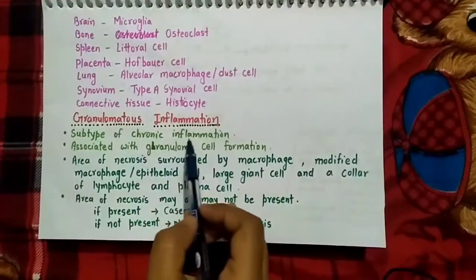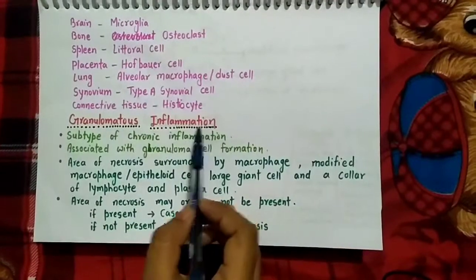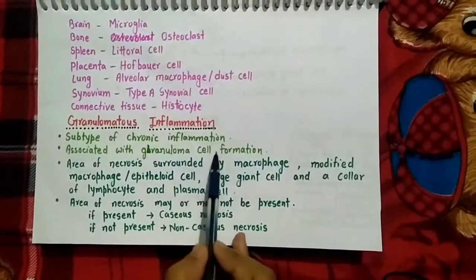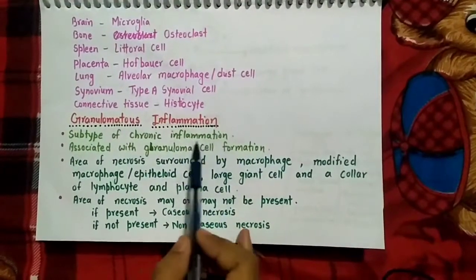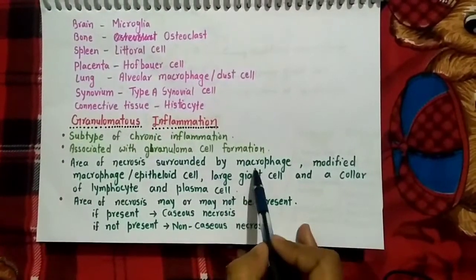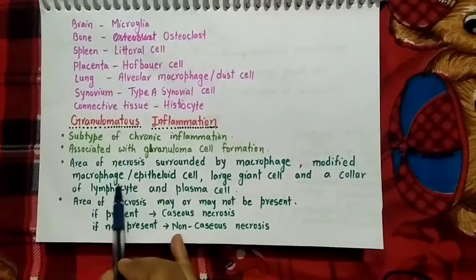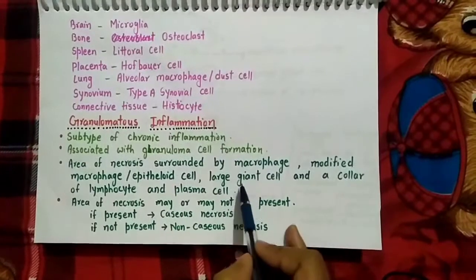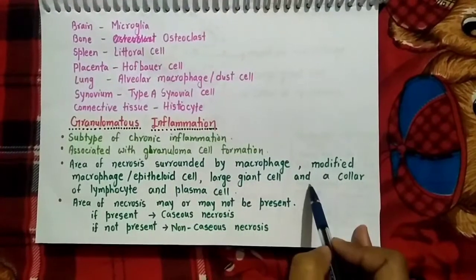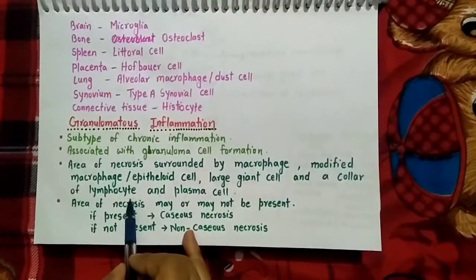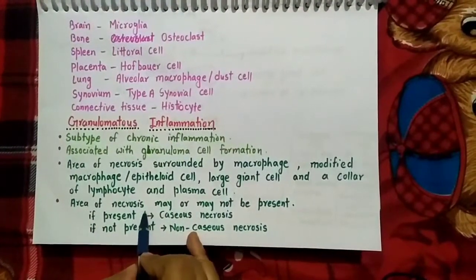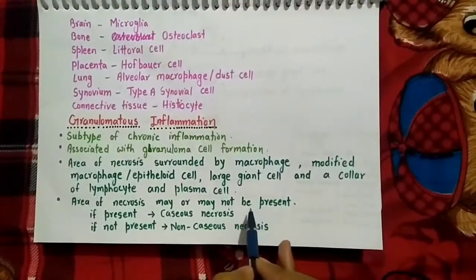Granulomatous inflammation is a subtype of chronic inflammation mainly associated with the formation of granuloma. A granuloma is an area of necrosis or injury surrounded by macrophages, modified macrophages also called epithelioid cells, further surrounded by large giant cells formed by fusion of epithelioid cells, and lastly a collar of lymphocytes or sometimes plasma cells. Area of necrosis may or may not be present.